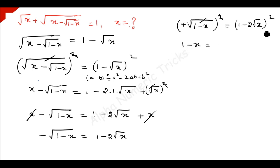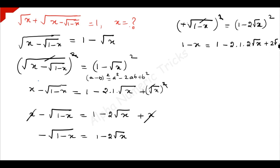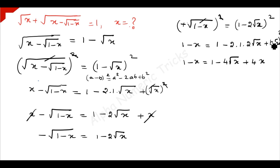So 1 minus x is equal to — applying (1 minus 2√x)²: 1 minus 4 times square root of x plus 4 times x, because 2 squared is 4 and square root of x squared is x.